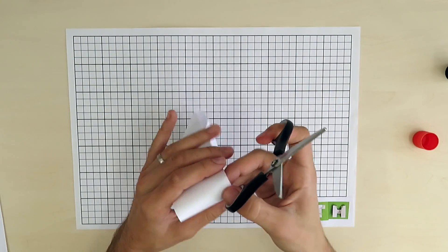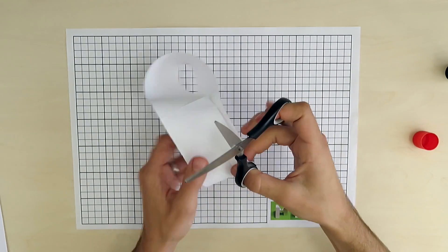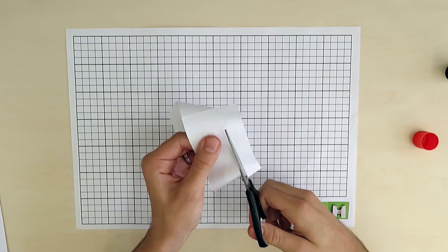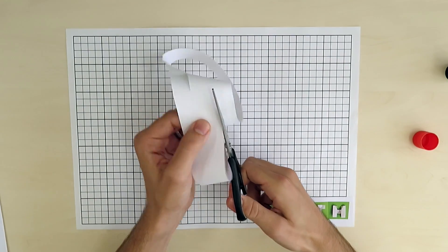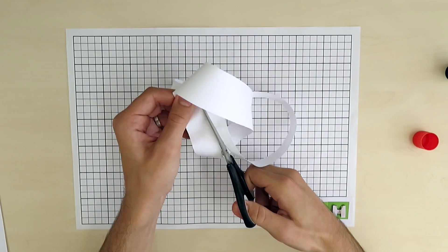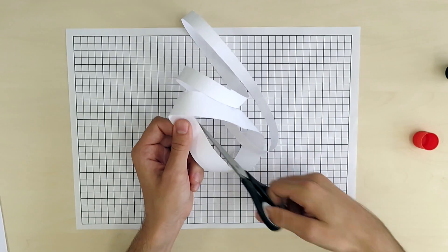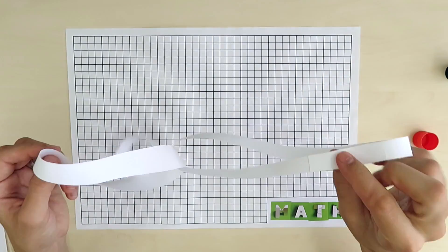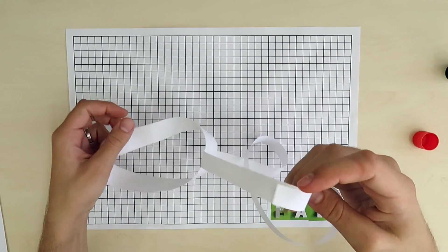When we cut Möbius strip in thirds lengthwise, we get one four twist loop and one Möbius strip interlocked together.